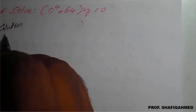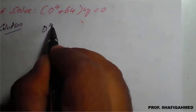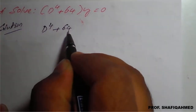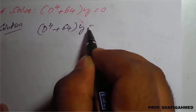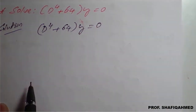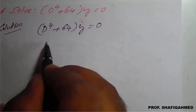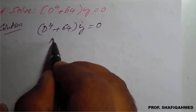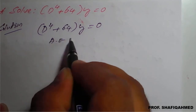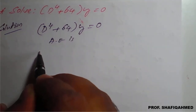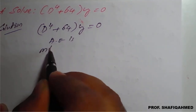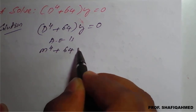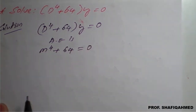The given equation is already in standard form: d raised to 4 plus 64 of y equal to 0. For this, we have to write an auxiliary equation. The auxiliary equation is, in terms of m: m raised to 4 plus 64 equal to 0.